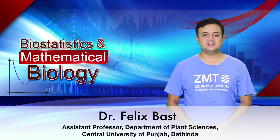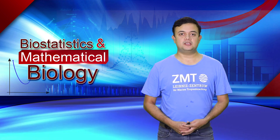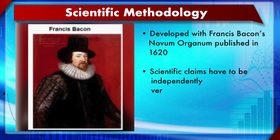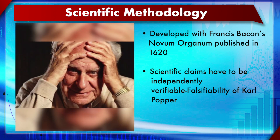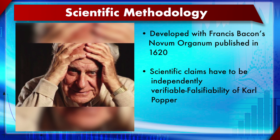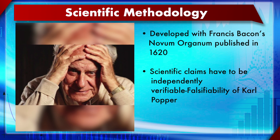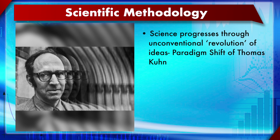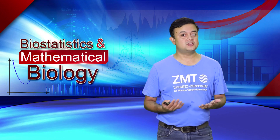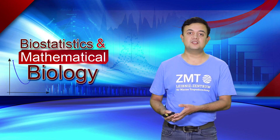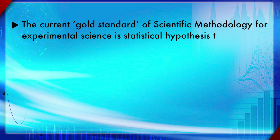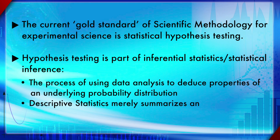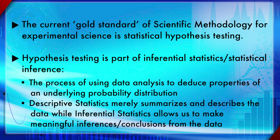Module 12, Section 1: Statistical Hypothesis Testing. In Module 1, Section 3, we learned about scientific methodology, developed from Francis Bacon's Novum Organum onwards. Scientific claims have to be independently verifiable and falsifiable — a concept called falsifiability from Karl Popper. Science progresses through paradigm shifts (Kuhn). The current gold standard of scientific methodology for experimental science is statistical hypothesis testing.